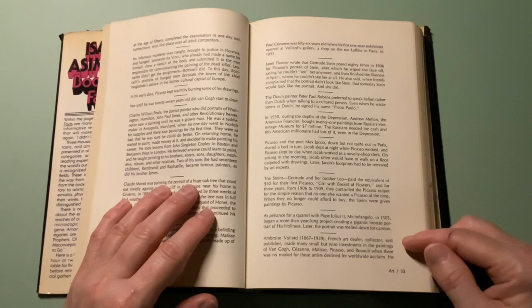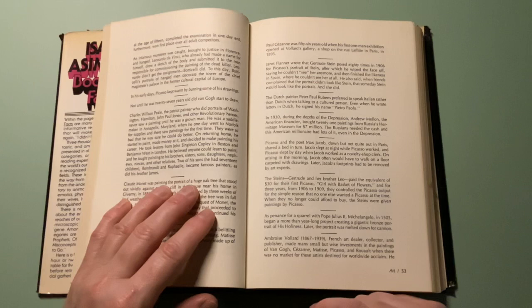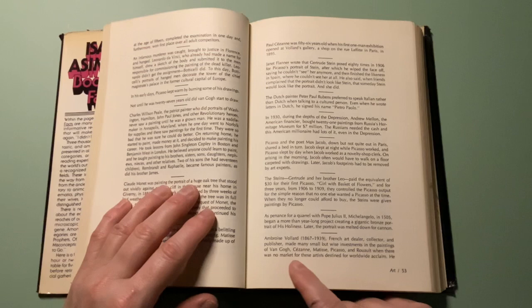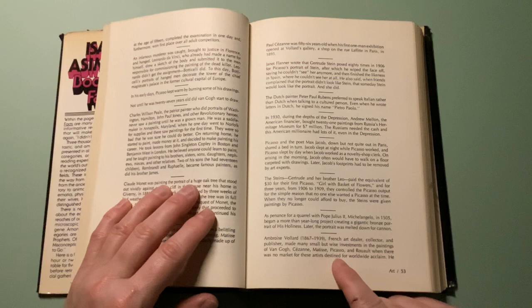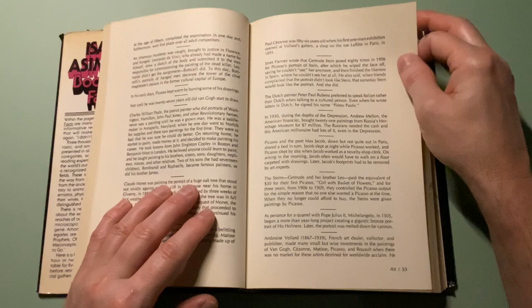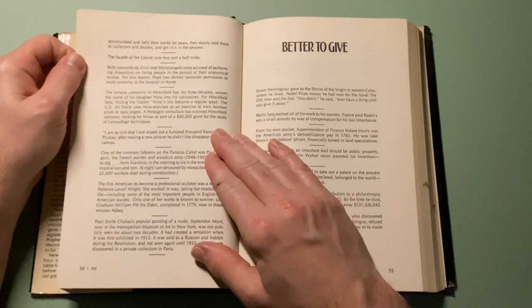Ambroise Vollard, French art dealer, collector, and publisher, made many small but wise investments in the paintings of Van Gogh, Cezanne, Matisse, Picasso, and Utrillo when there was no market for these artists destined for worldwide acclaim. He accumulated and held their works for years, then slowly sold them to collectors and dealers, and got rich in the process.